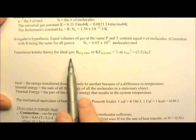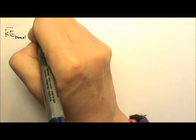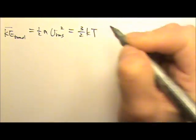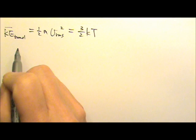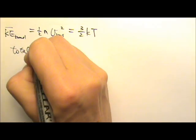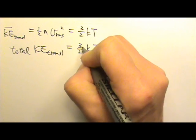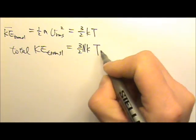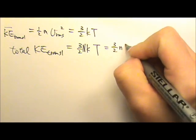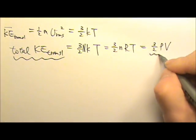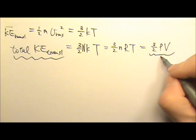For the translational kinetic theory of ideal gas, we learned that the average translational kinetic energy is 1/2 m times the root mean squared speed squared, which is 3/2 kT. And this is the average per molecule. Therefore, the total translational kinetic energy would be the average times the number of molecules. So this is 3/2 NkT, which is 3/2 nRT, which is 3/2 PV.